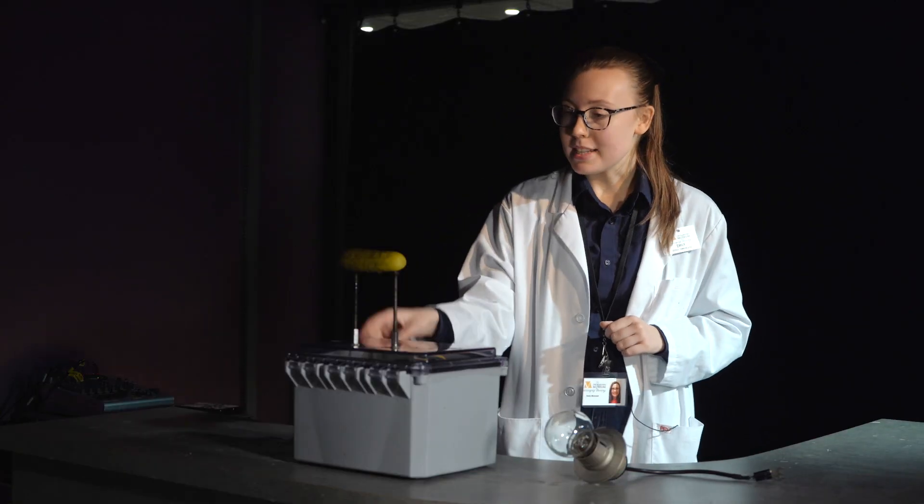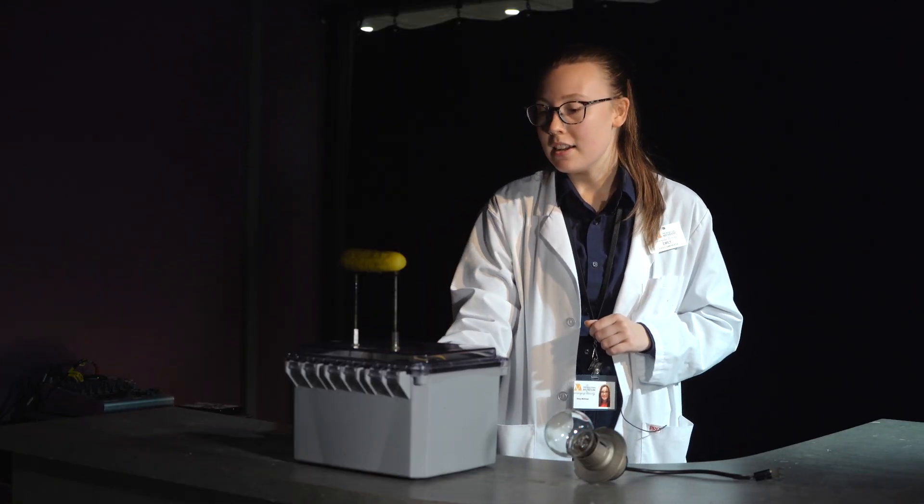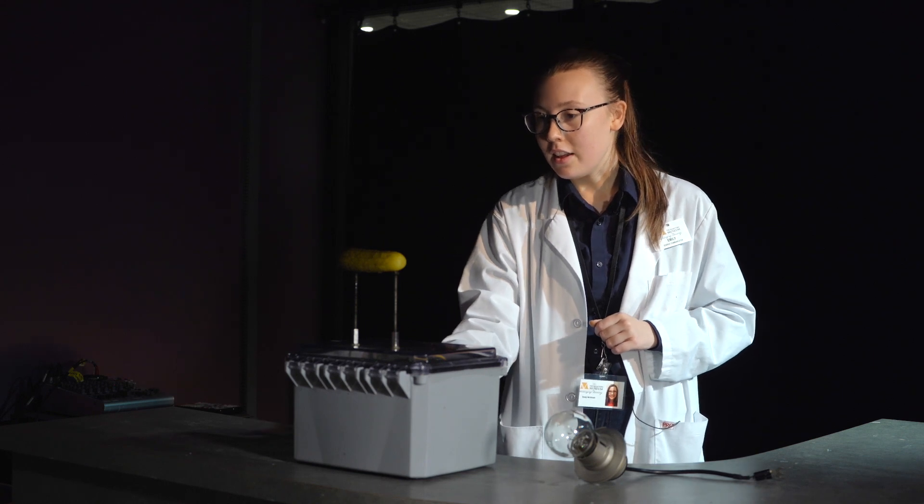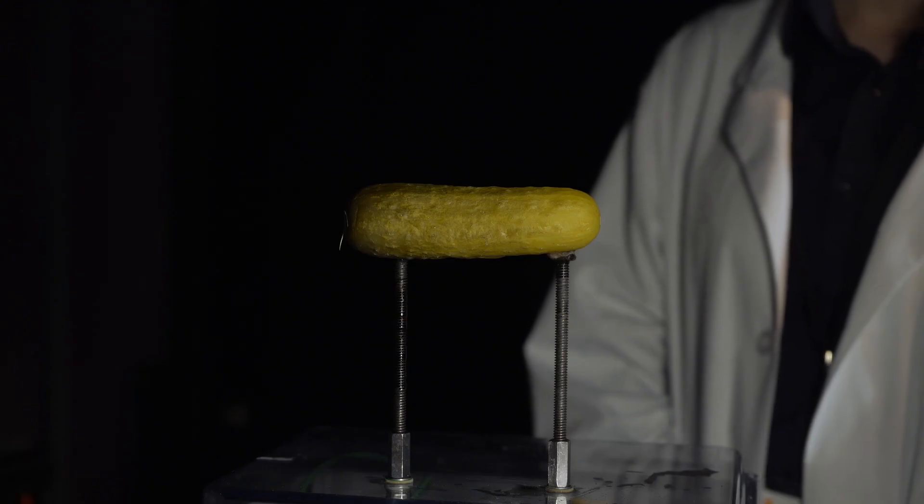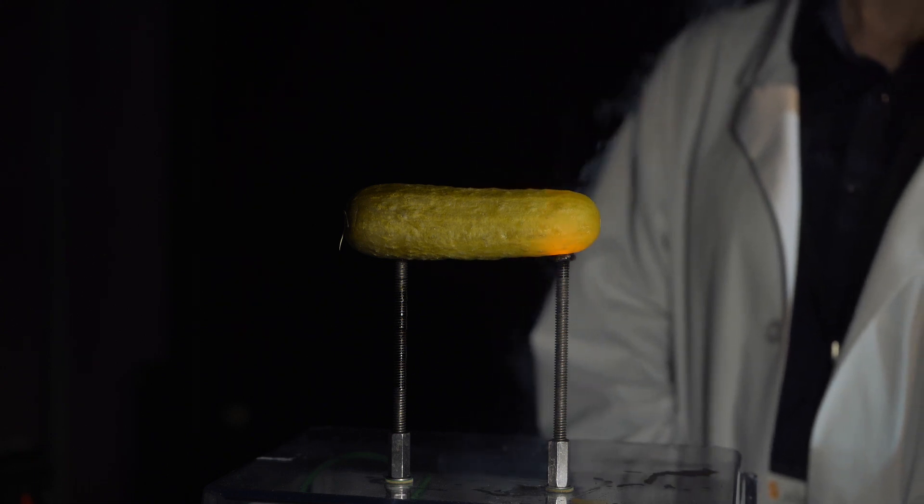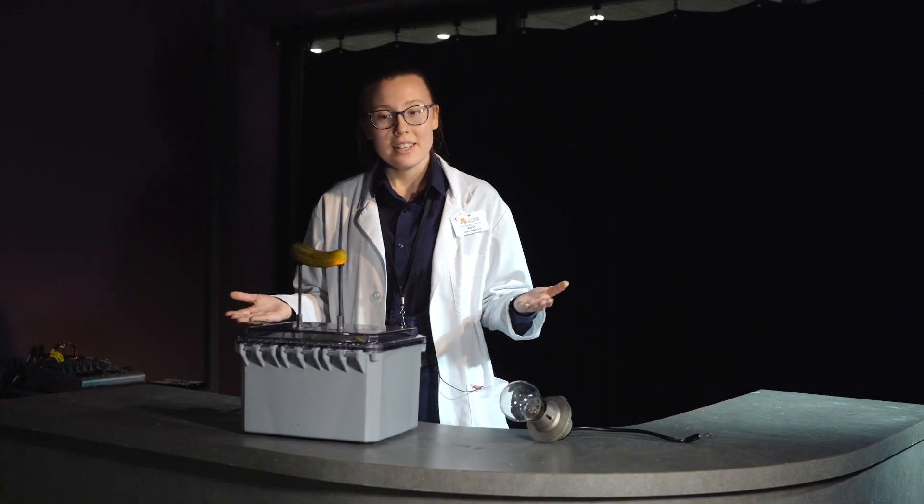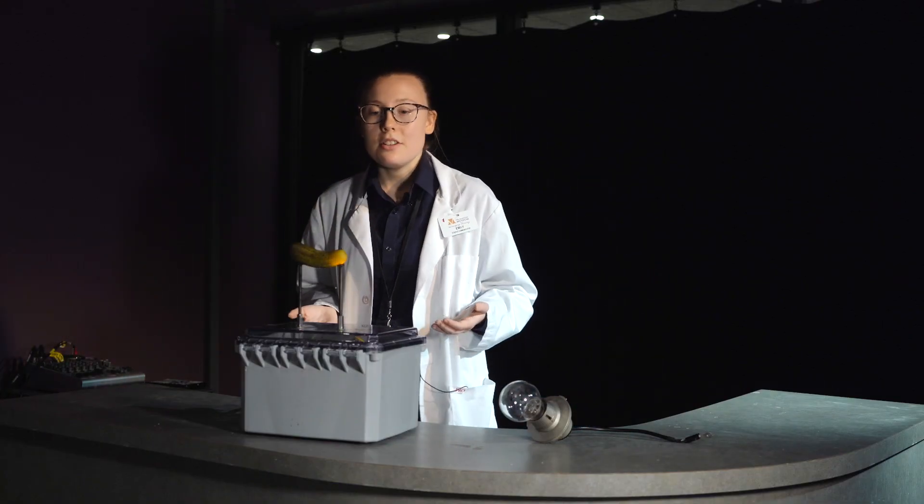I'm going to show you what happens when we send a stream of electrons through this wire, through our pickle and down to the other side. So we're sending a stream of electrons into one side of the pickle. As you might be able to see, it is starting to slowly smoke and spark a little bit, and the end of the pickle does begin to glow.